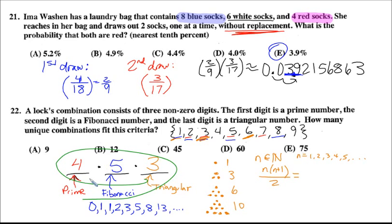The entire problem reduces to four times five times three, which is four times five gives you twenty. Twenty times three gives you sixty. D.